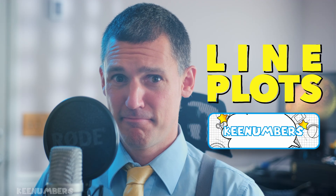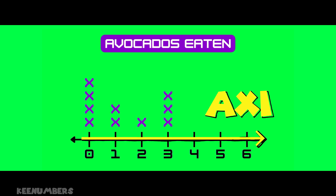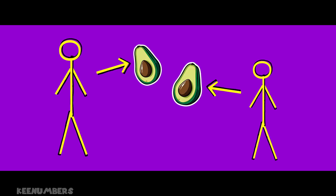What is a line plot? The best way to learn is to look at a picture. Here I have a horizontal line — an axis — with numbers on it. If I wanted to know how many kids had one avocado, I look at the one on this line and count the X marks above it. One, two — that means two students had one avocado.